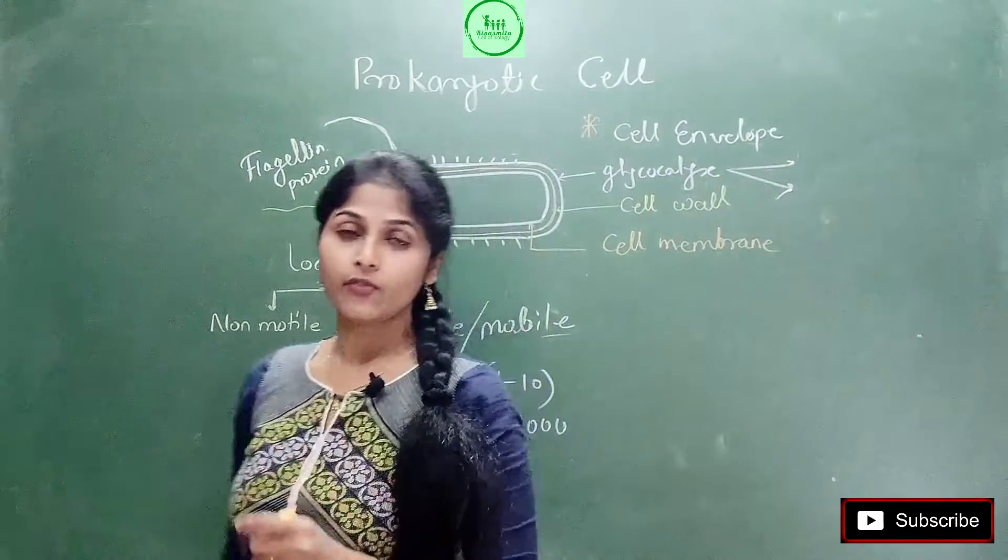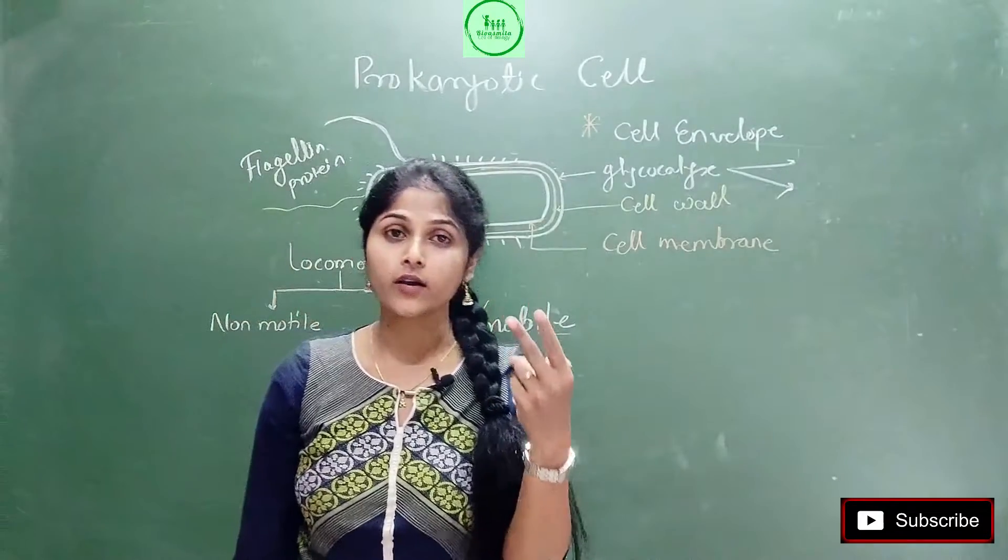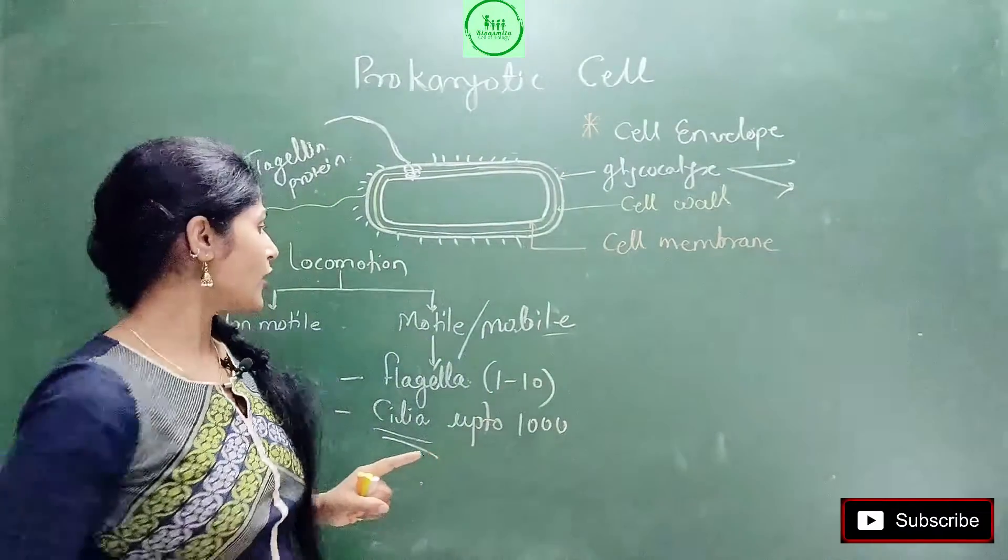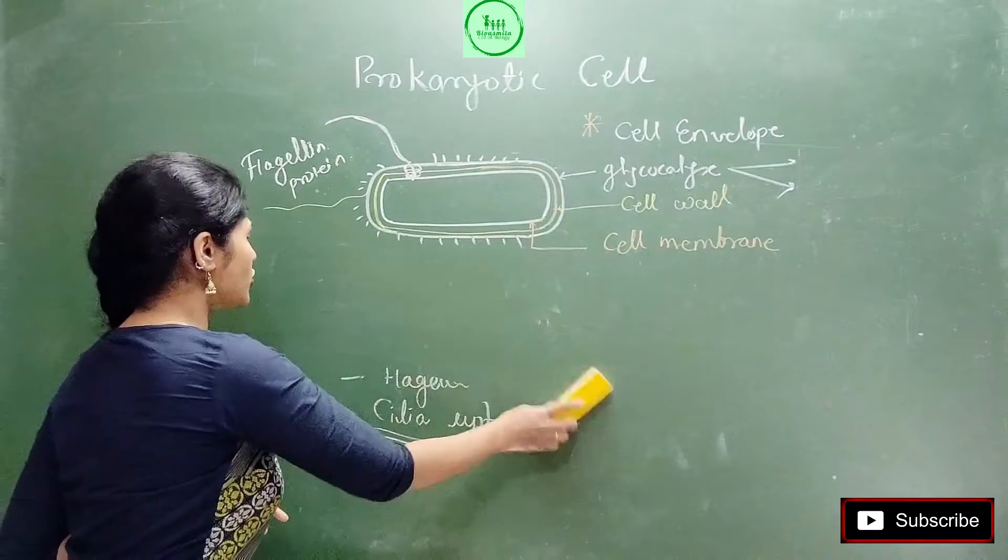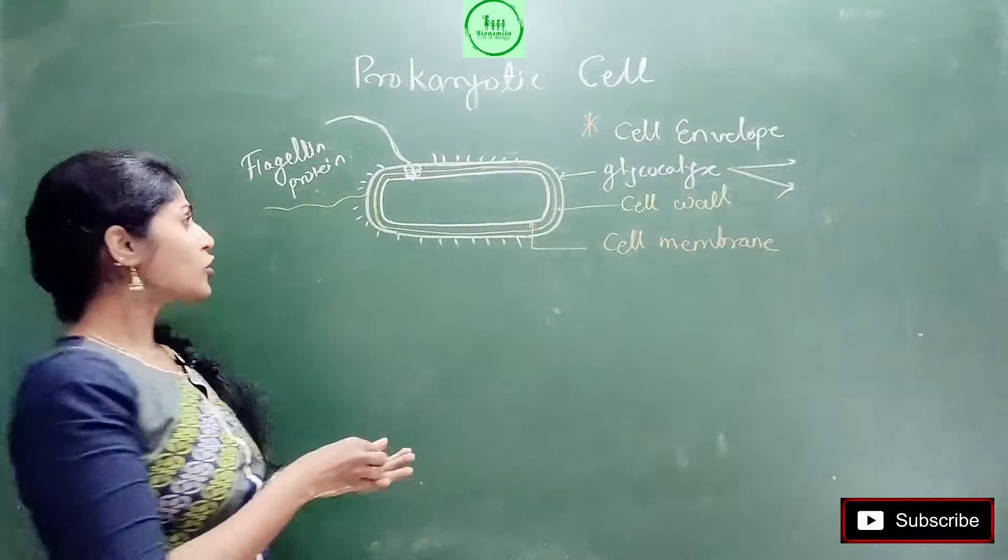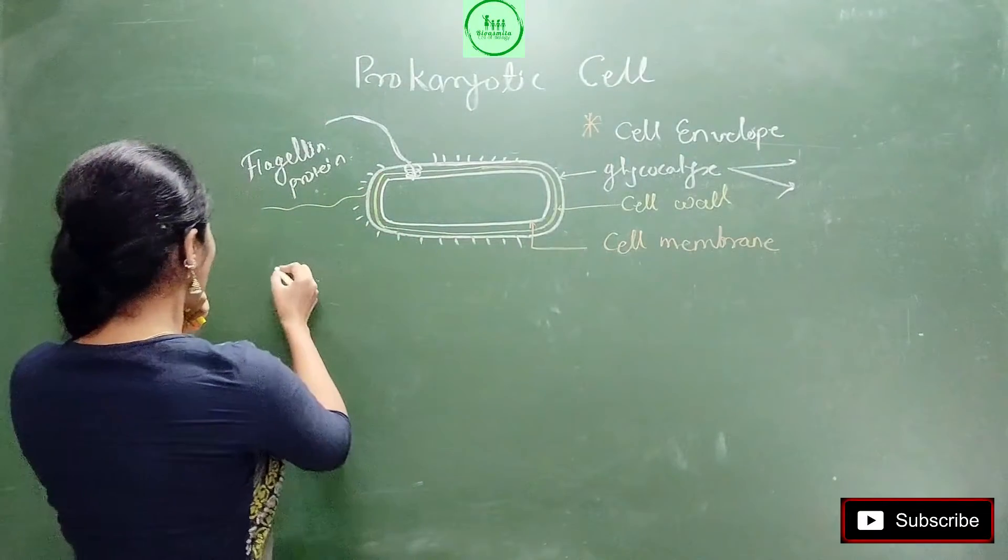These are the two appendages or two parts which are present on the surface of bacteria and which help in motility. Now along with cilia and flagella, there are two more organs which are present on the surface. But those are not required for motility.